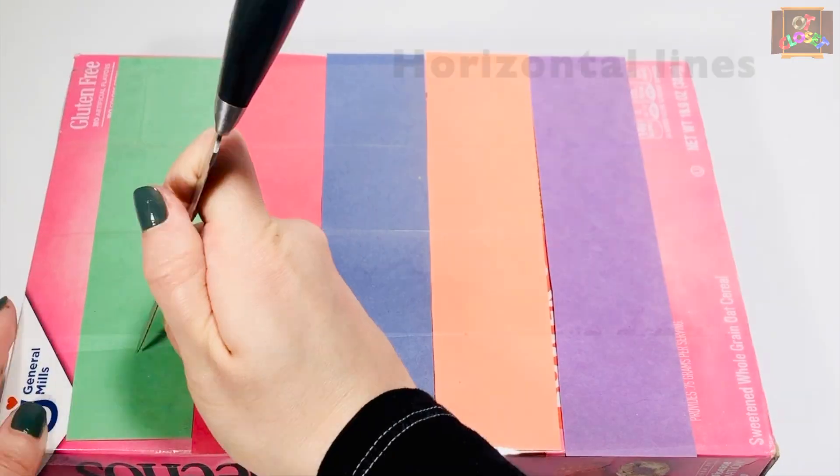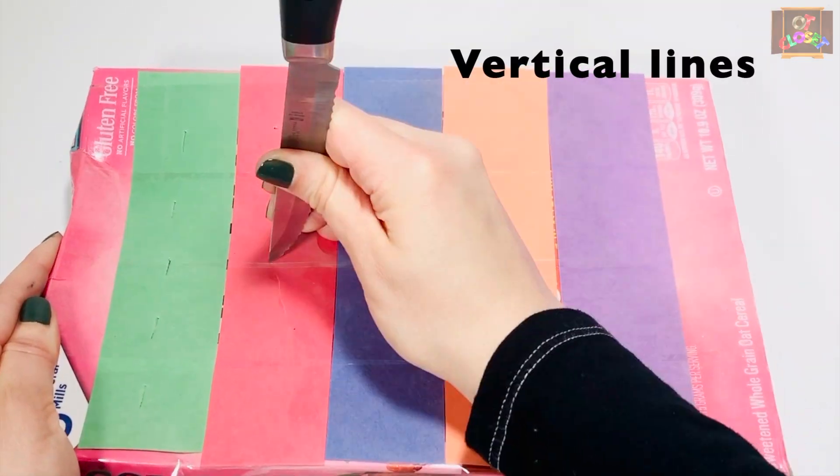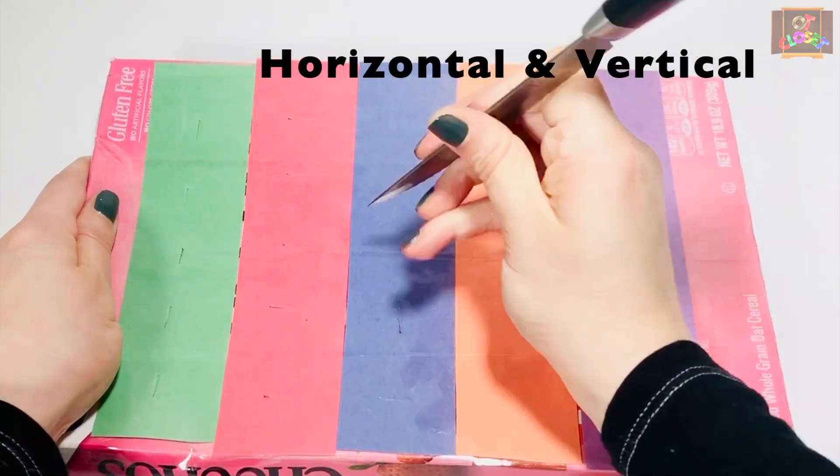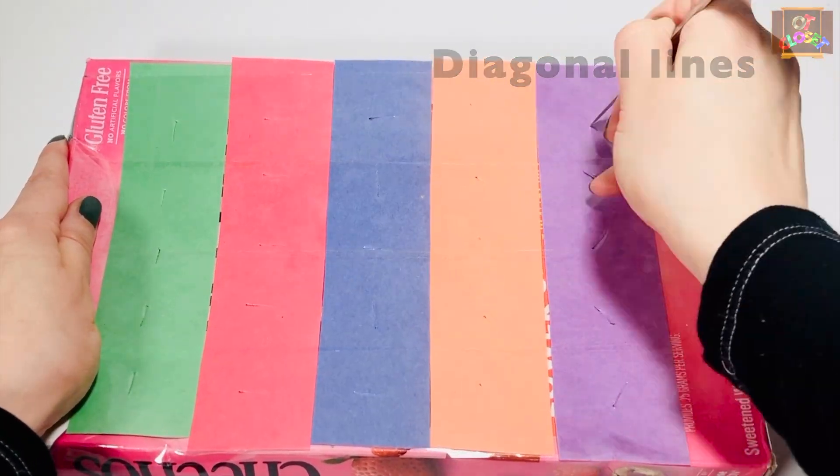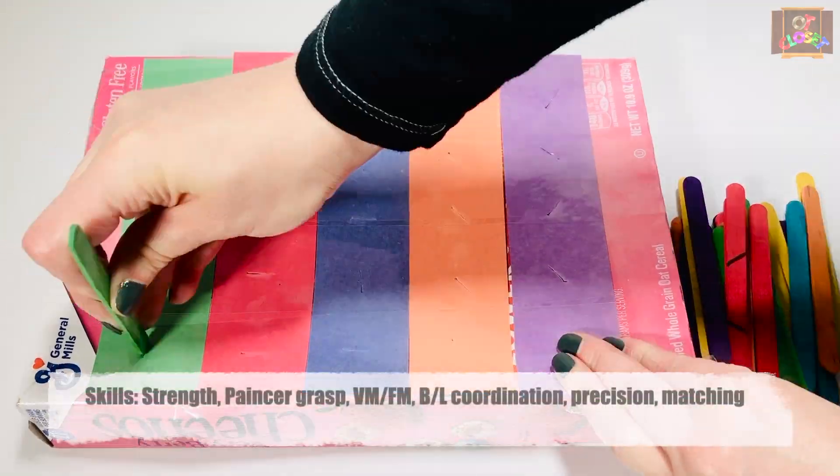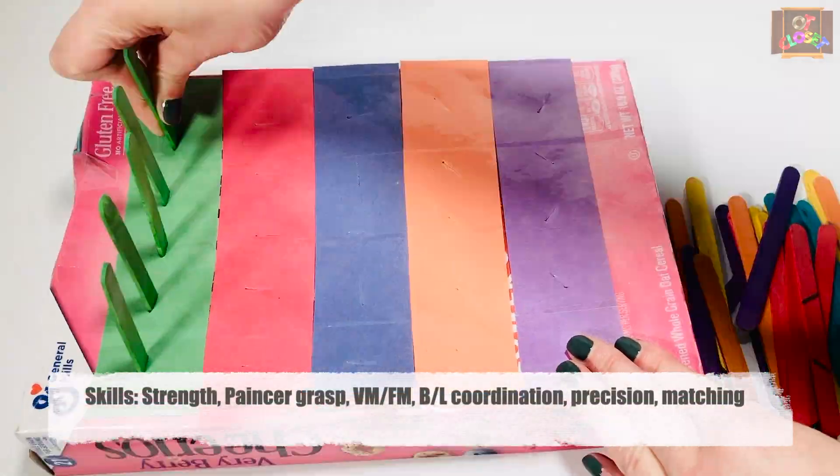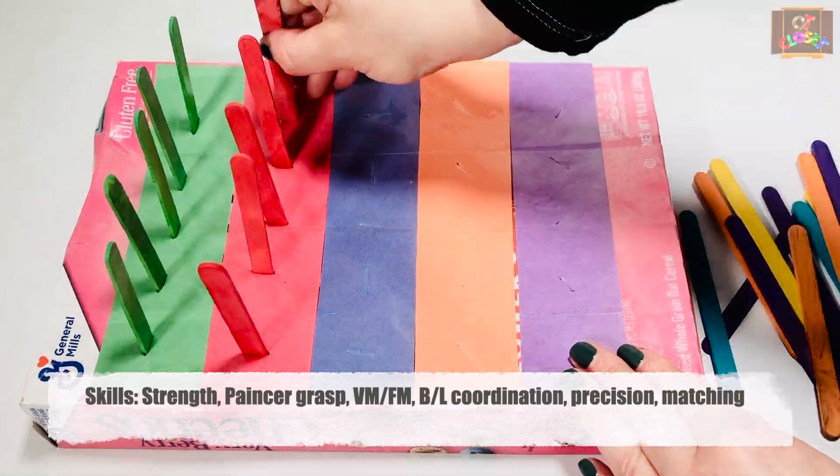Use the knife and make horizontal lines, vertical lines, then interchange horizontal and vertical lines, and some diagonal lines. Ask your children to push in the popsicle sticks and match the colors at the same time.